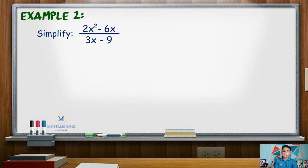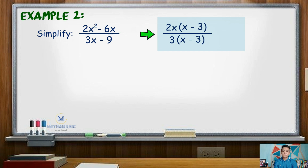Second example: simplify 2X squared minus 6X all over 3X minus 9. Getting the common factor 2X of the numerator gives 2X times quantity X minus 3. The denominator's common factor is 3, giving 3 times quantity X minus 3. The binomial X minus 3 is common to both, so we cancel it out. The simplified form is 2X over 3.